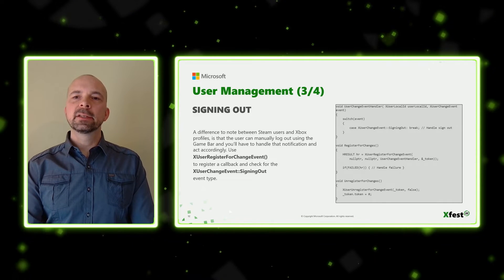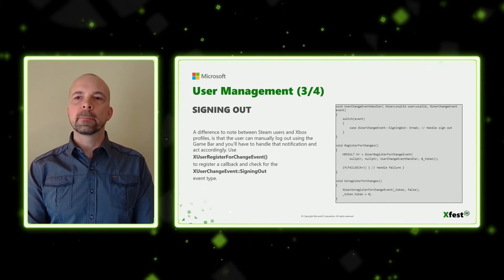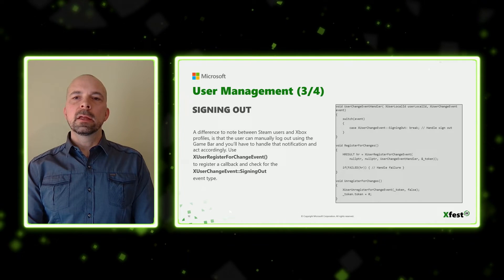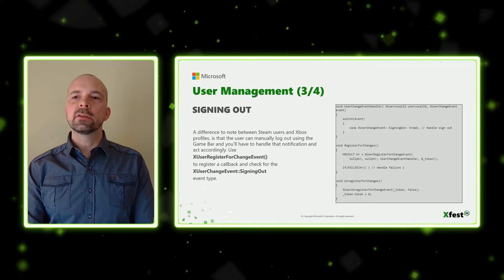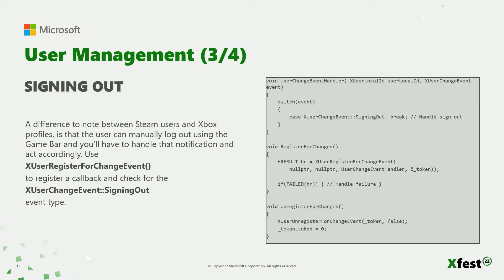In Steam, when the user signs out, it will take the game processes with it. The user can also sign out of the Xbox user, either through the game bar or the Xbox app. In order to get a notification when this happens, we'll use xuserregisterforchange event, and check for the xuserchange event signing out event type. At this point, we can choose how to handle that — either shut down or simply continue the game warning the user, or taking the user out of the gaming experience.